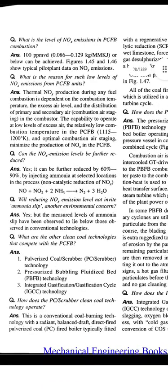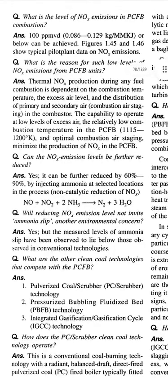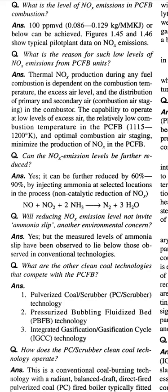Question: What is the reason for such low levels of NOx emissions from PCFB units? Answer: Thermal NOx production during any fuel combustion depends on the combustion temperature, the excess air level, and the distribution of primary and secondary air — combustion air staging in the combustor. The capability to operate at low levels of excess air and the relatively low combustion temperature in the PCFB (1,115 K to 1,200 K), along with optimal combustion air staging, minimizes the production of NOx in the PCFB.